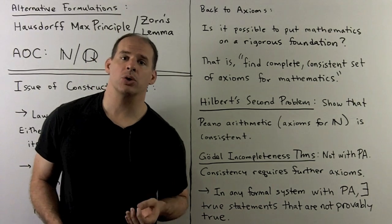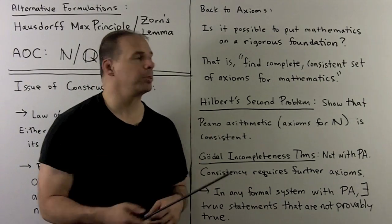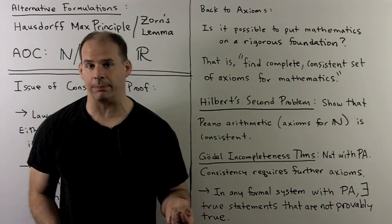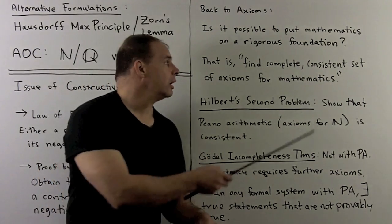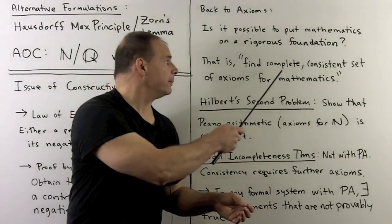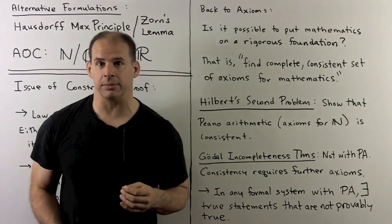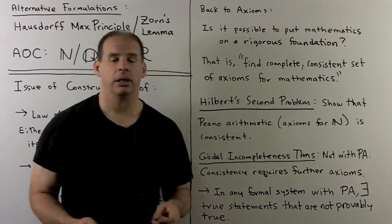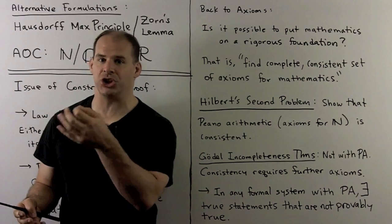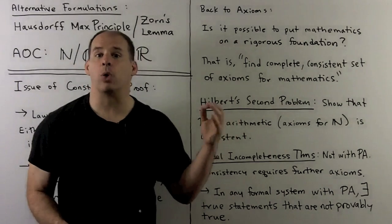We finish with a big question, but without a course in formal logic, we can only scratch the surface of the answer here. The question is: is it possible to put all of mathematics on a rigorous foundation? In other words, can we find a complete consistent set of axioms for all of mathematics? What would that mean? By a consistent set of axioms, we want a set of axioms that do not contradict one another. And by complete, we would want that for any well-posed mathematical statement, we could show that it's true or false using only these axioms. I put this in quotes because it's not the right type of question to be asking. The type of proofs we do in algebra, analysis, and geometry are very different from the type of proofs we do in formal logic. This is the kind of question that we would need formal logic to answer.